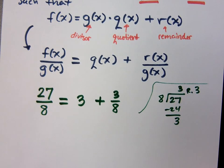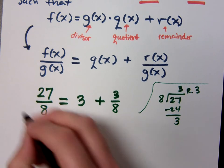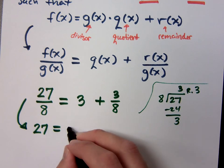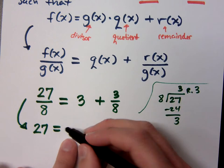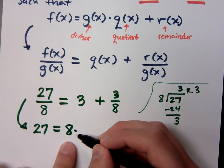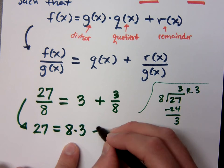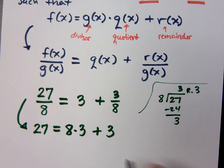What that lets us do is rewrite 27 to be made up of what? Look, what were you dividing by? I was dividing by 8, and what did I get from my quotient? How many times did 8 go into 27? Three. Plus what was your remainder piece? Three. So 27 equals 8 times 3 plus 3.